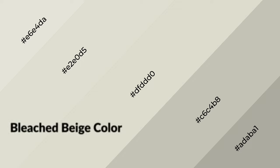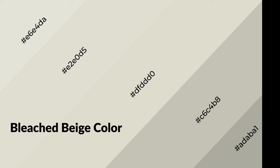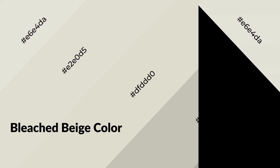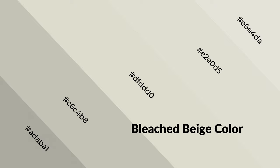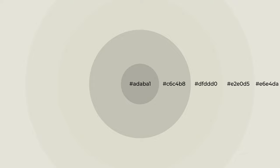Bleached beige is a warm color and it emits cozier and active emotion. Warm colors are symbols of warmth, fire, heat, and sunshine. It also evokes joy, passion, love, and even anger. You can see them used in restaurants and gyms.